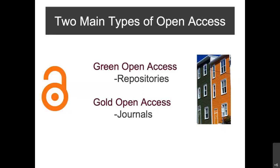There are two basic kinds of open access. Green refers to repositories — this is where scholarship becomes open access for the first time, through a repository. It could be a thesis, dissertation, white paper, or similar. Gold open access refers to journals and is usually the publisher version of a journal article.